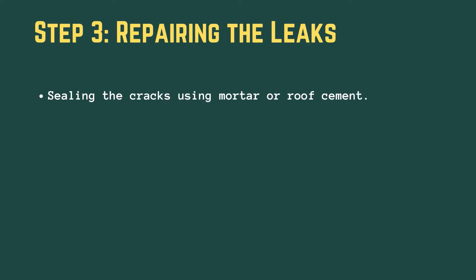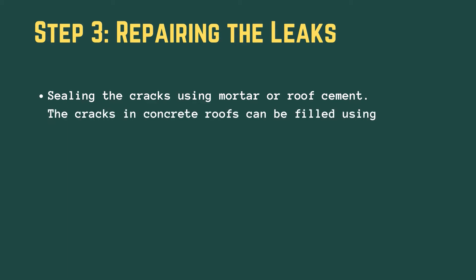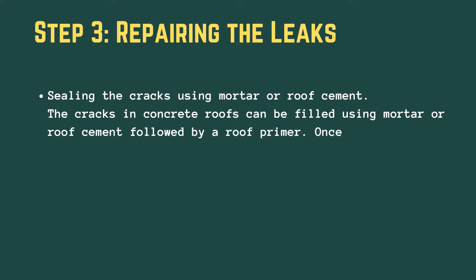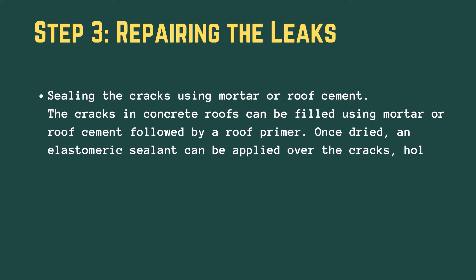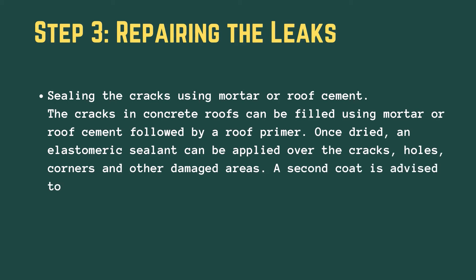Method 1: Sealing the cracks using mortar or roof cement. The cracks in concrete roofs can be filled using mortar or roof cement, followed by a roof primer. Once dried, an elastomeric sealant can be applied over the cracks, holes, corners, and other damaged areas. A second coat is advised to reinforce the sealant.